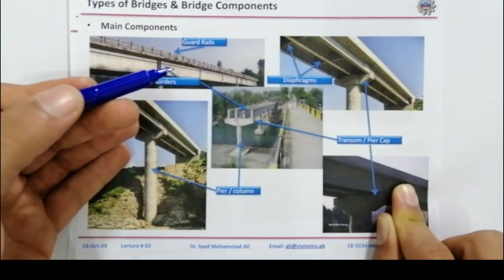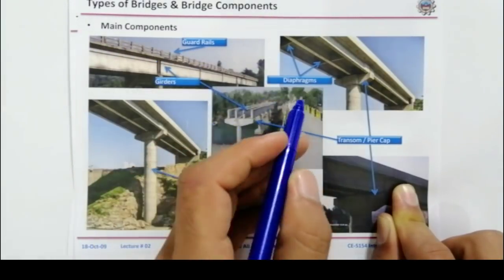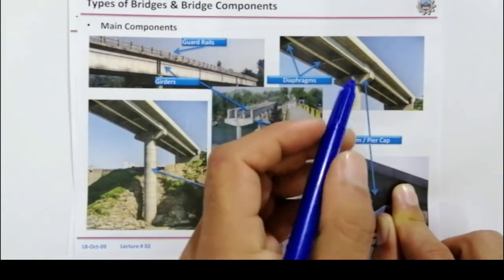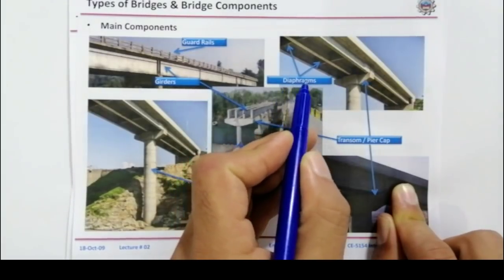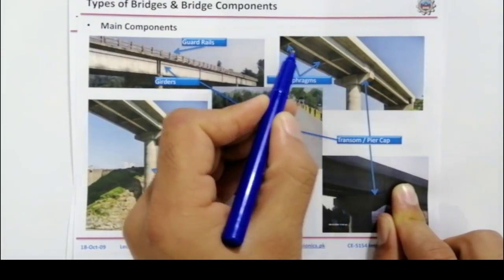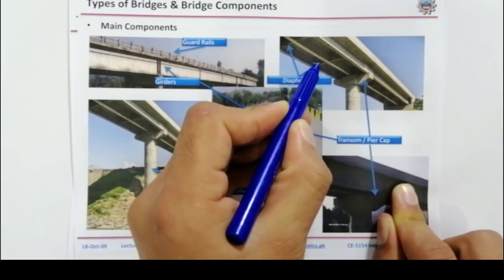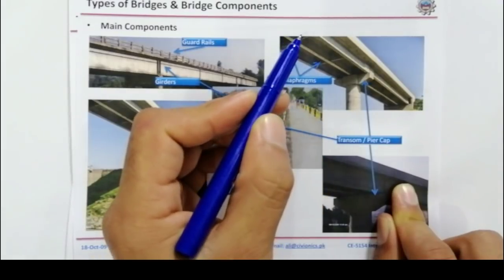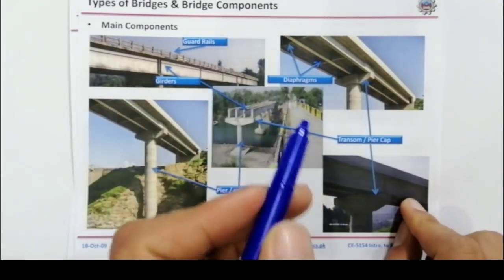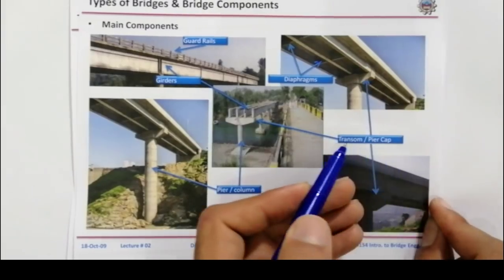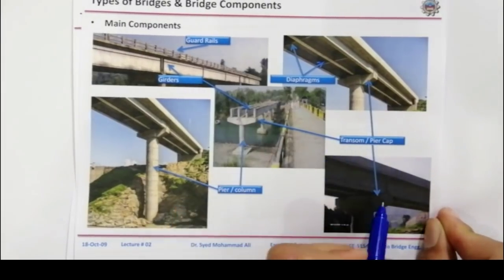Now, what is a diaphragm in a prestressed concrete bridge? You can see this is called a diaphragm — these are called diaphragms. Now, what is a transom or pier cap? This is also called a pier cap here.